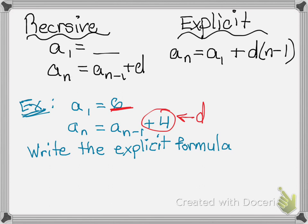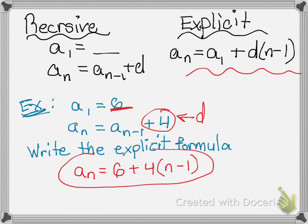So now I can write this formula out. It'll be a sub n equals 6, since that's my a sub 1, plus 4, since that's my common difference, times n minus 1. Technically, that's it.